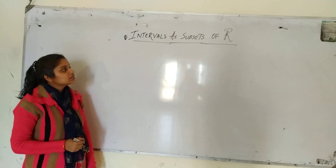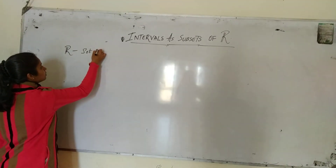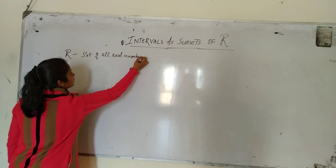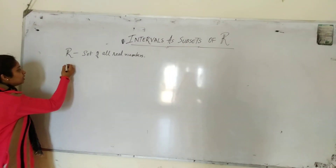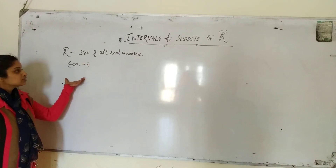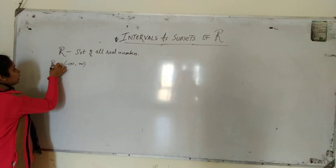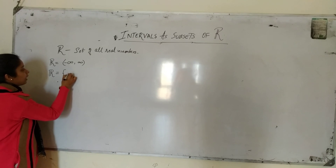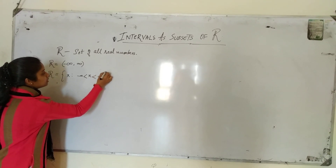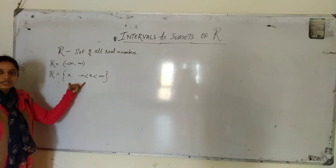Today we are going to study the intervals as subsets of R. So what is R? R is the set of all real numbers. We can write it in roster form as minus infinity to infinity. In set builder form, R equals the set of x such that x is greater than minus infinity and less than infinity. This is the representation of the set of real numbers in set builder form.